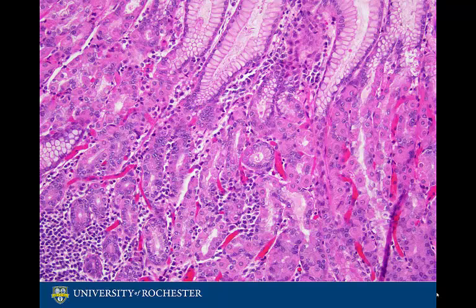The mucosa of the fundus and body contain a mixture of mucous cells and parietal cells, and can be characterized as oxyntic mucosa. The antral mucosa then returns to being predominantly mucous cells.